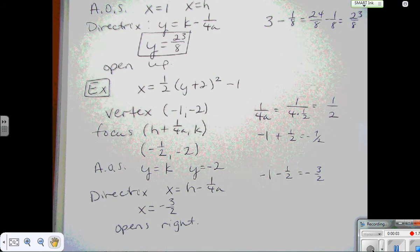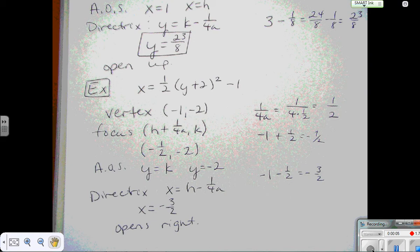Okay, so for the second example, you should be getting the vertex is negative 1, negative 2.